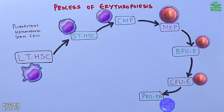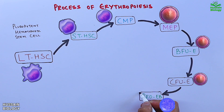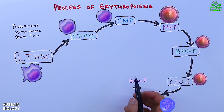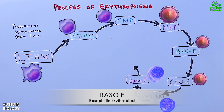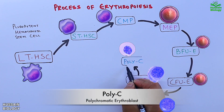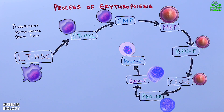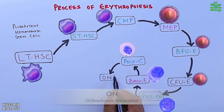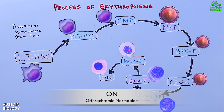The erythrocyte precursor lineage starts from proerythroblasts. The proerythroblast differentiates into BasoE, the basophilic erythroblast. This basophilic erythroblast gives rise to POLYC, the polychromatophilic erythroblast or normoblast, which in turn gives rise to ON, the orthochromic normoblast.